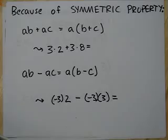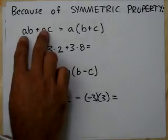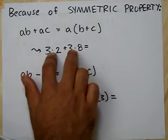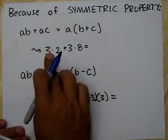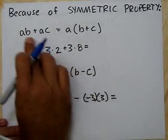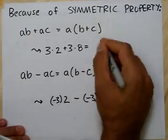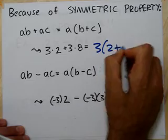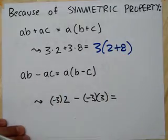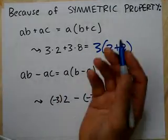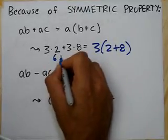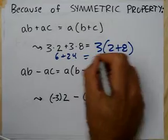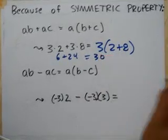Because of the symmetric property, we can reverse the whole thing — that's factoring. I have 6 plus 24; they both have a common factor of 3. So I take the 3 out and rewrite: 3 times (2 plus 8). I factored out a 3, doing distribution in reverse. Let's check: 6 plus 24 is 30, and 3 times 10 is 30. Nice!